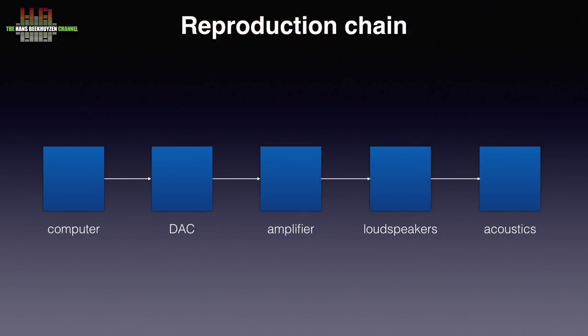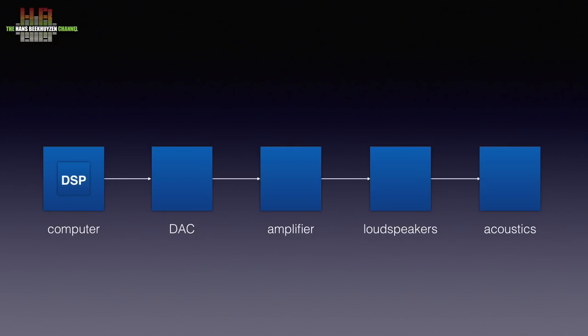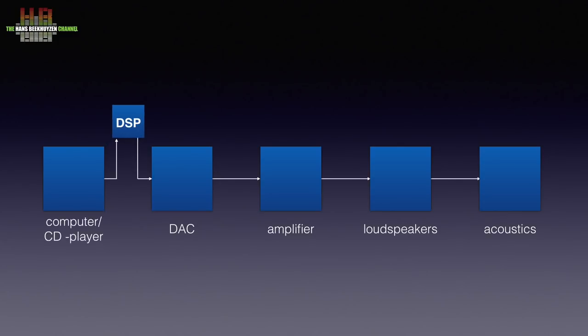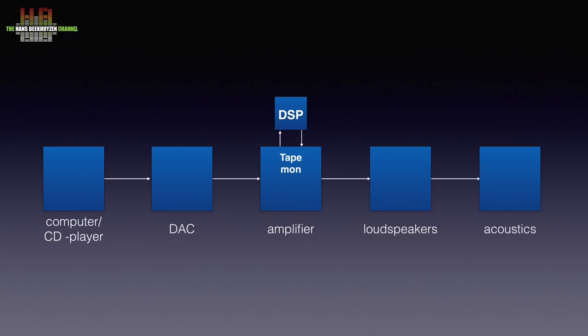Let's see again where room correction can be applied. This is the schematic of a reproduction chain — the sum of the stereo and room acoustics. If you use a computer as a source, software in the computer can do the room correction filtering. If your player software does not support this, or if you use another digital source like a CD player, you could use a room correction device with digital inputs between the digital source and the DAC. In both these cases the room correction will only work with the digital source and not with the TV connected to the same stereo. That is not the case if you use an amplifier or AV receiver with room correction built in. Alternatively, you can connect a room correction device via analog to the tape monitor connectors of the amp, though this requires additional analog-to-digital and digital-to-analog conversion.